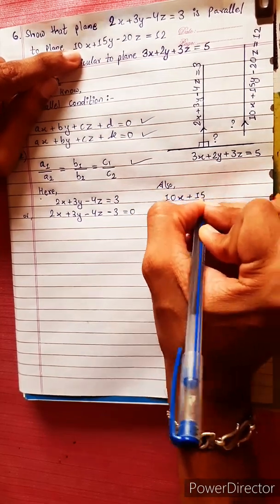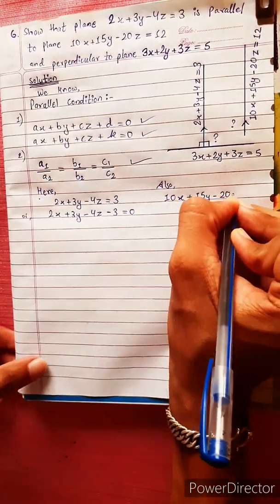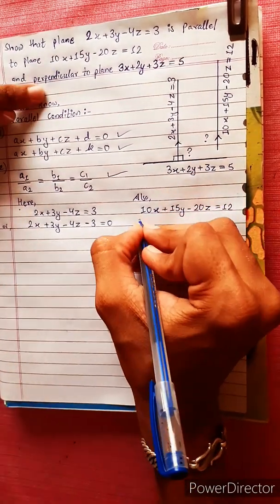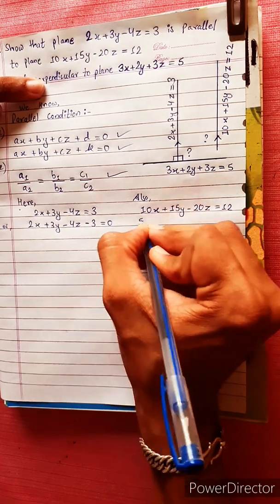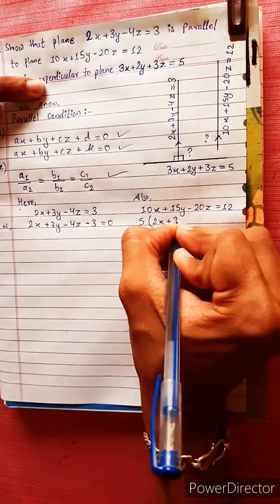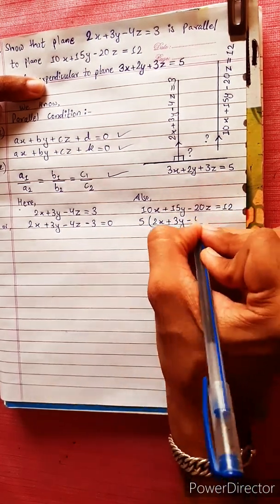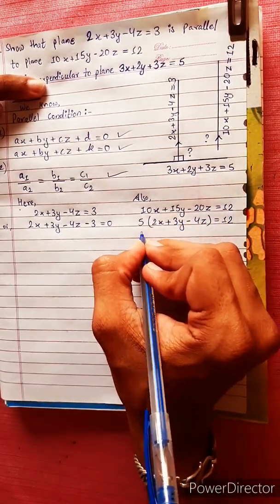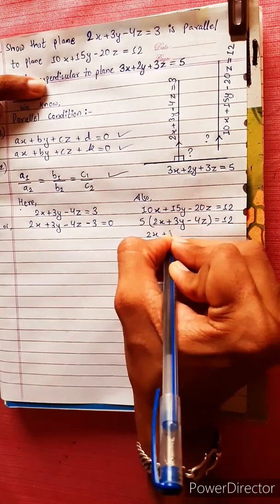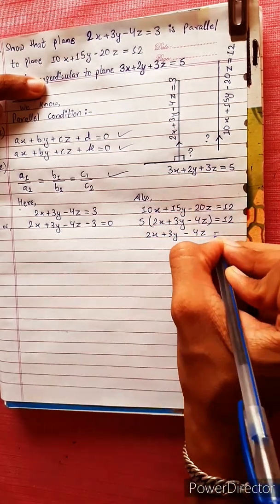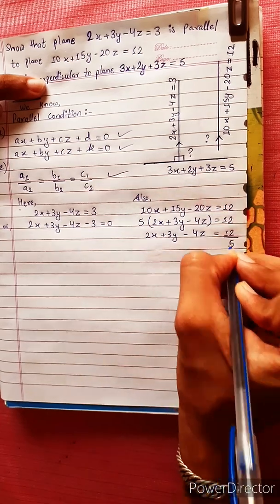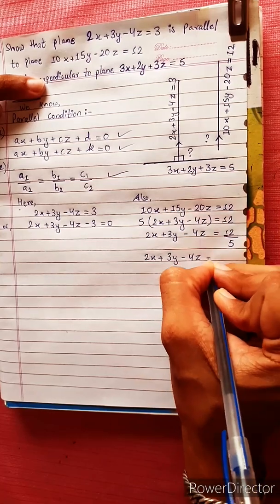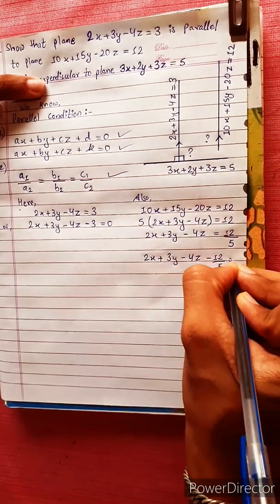The second equation is 10X + 15Y minus 20Z equals 12. Arranging this, we take common factor 5 out: 5 times (2X + 3Y minus 4Z) equals 12. So 2X + 3Y minus 4Z equals 12 divided by 5, giving us 2X + 3Y minus 4Z minus 12/5 equals 0.